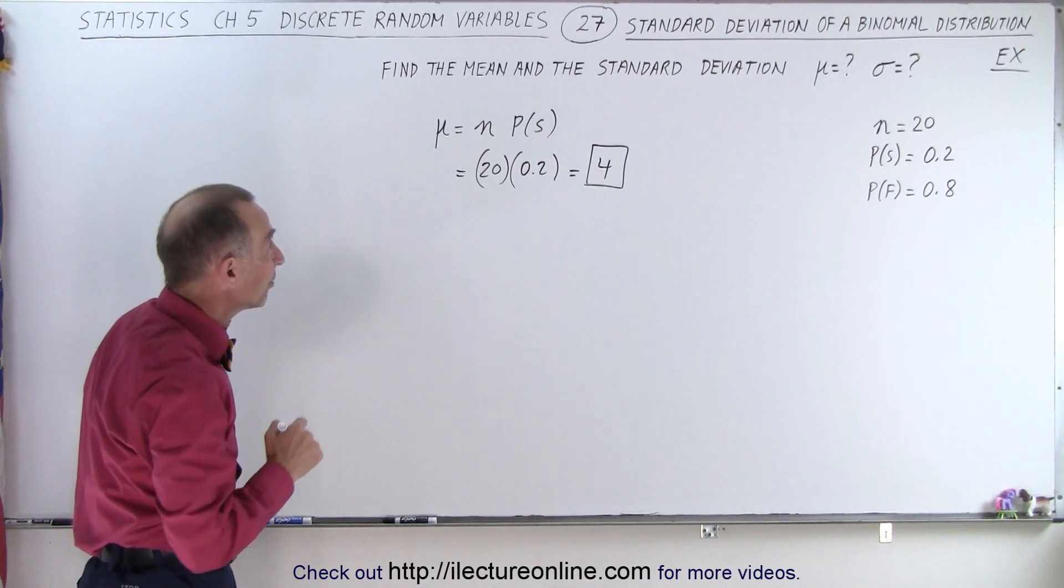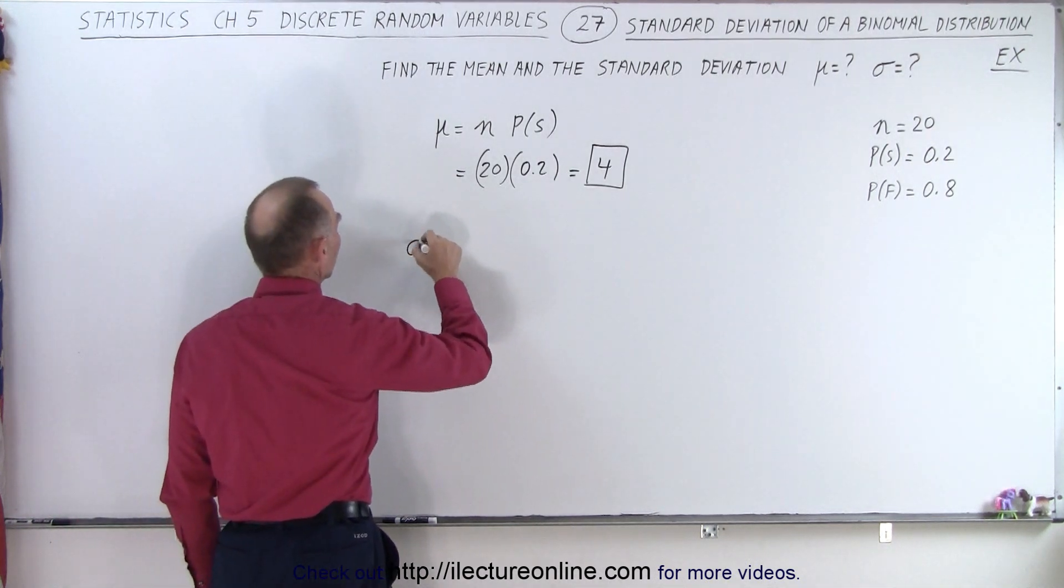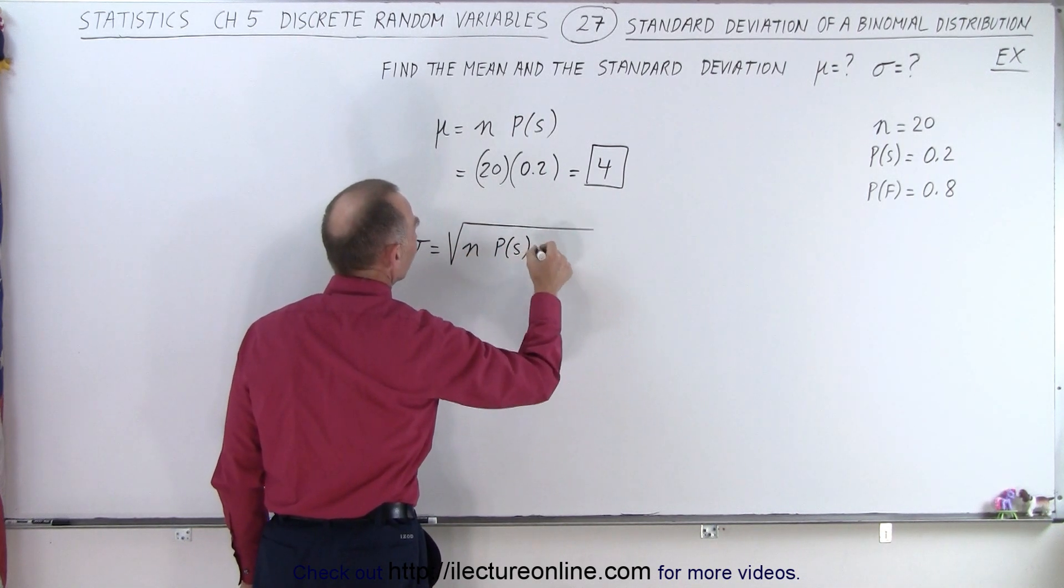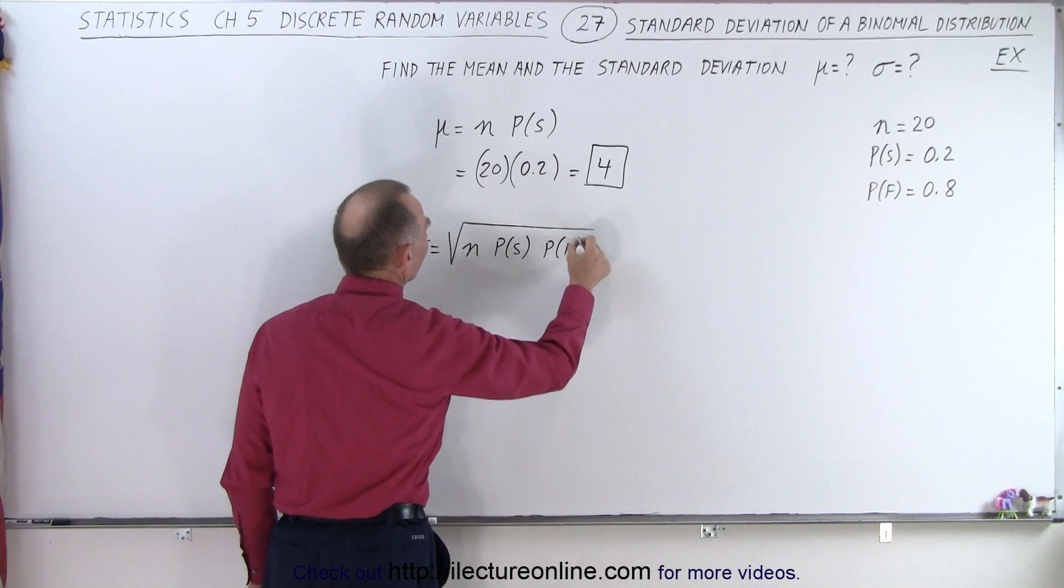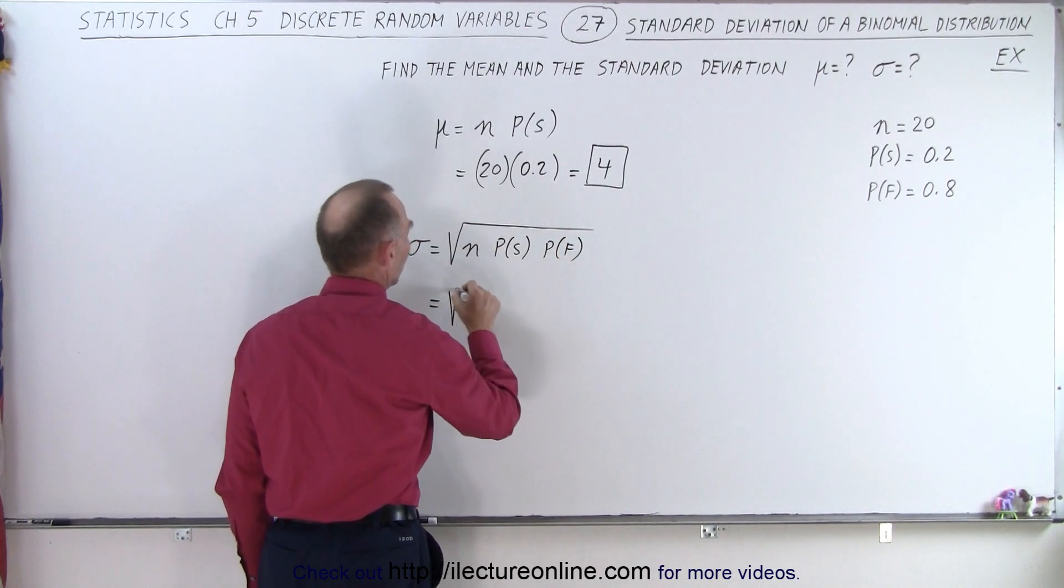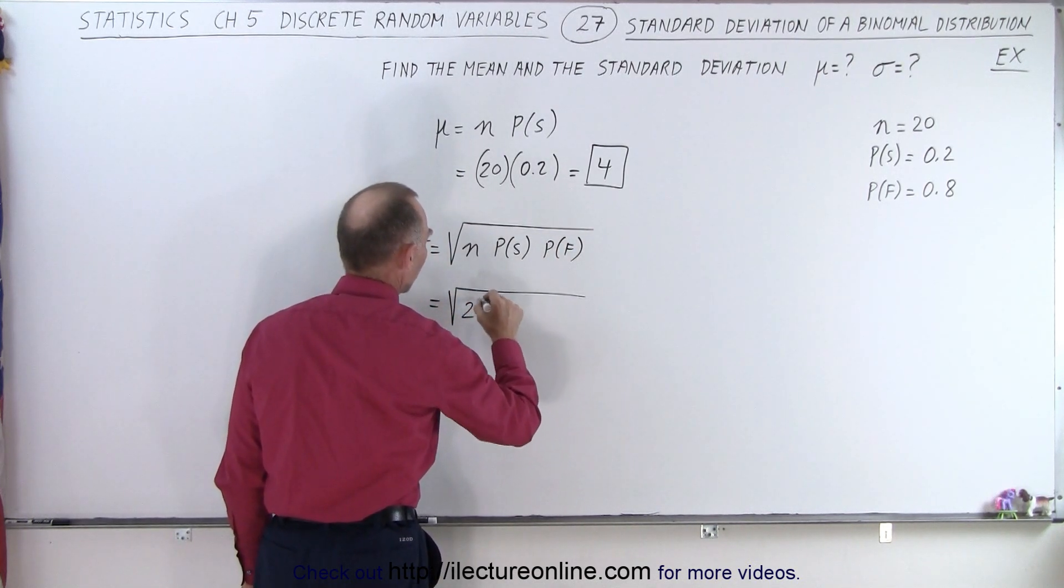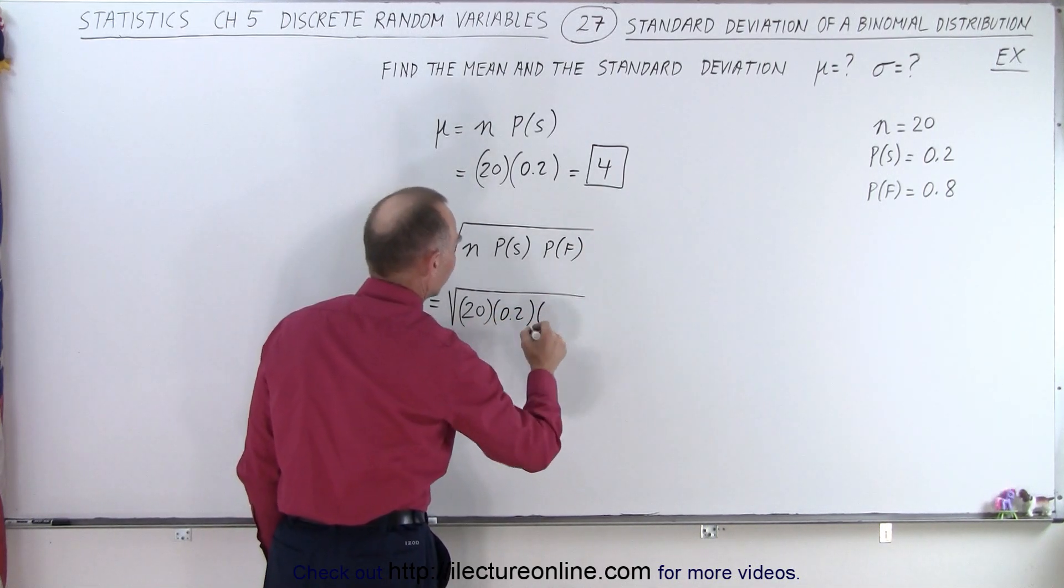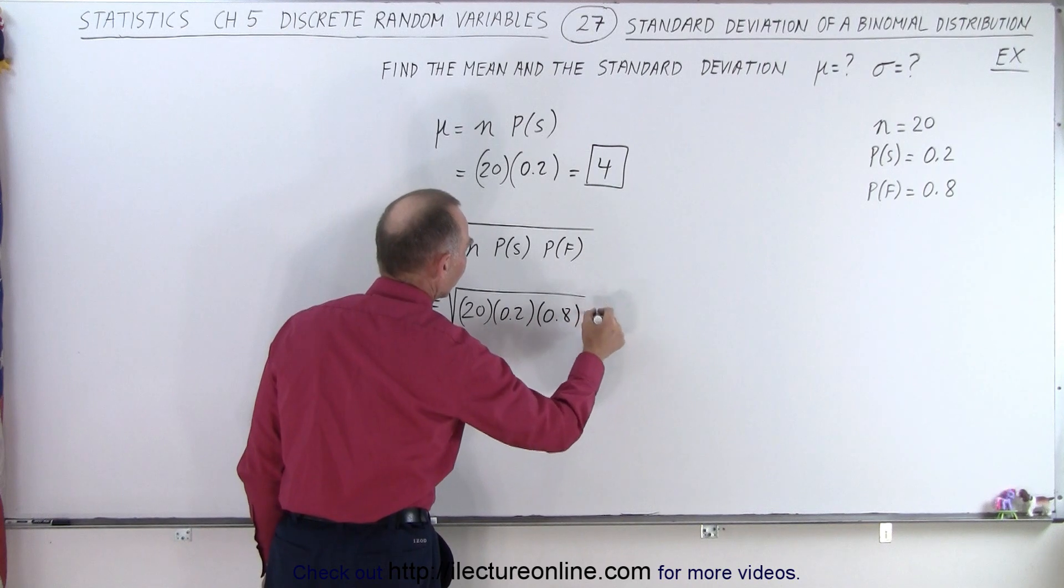All right, now the standard deviation. Sigma is equal to the square root of the number of trials times the probability of success times the probability of failure. So in this case, that's the square root of 20 trials times 0.2 times 0.8. Now for this, we're going to need a calculator.